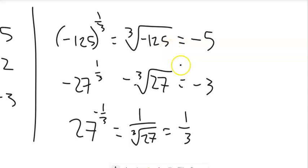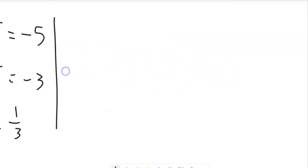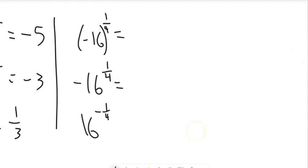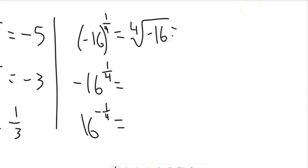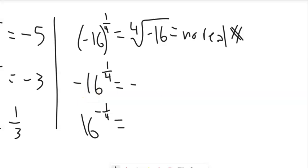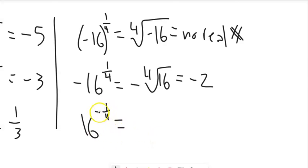The fourth root of negative 16: what times itself 4 times gives a negative number? There's no real solution, so the answer is no real number. But notice negative 16 to the 1/4 is different — only 16 is raised to the 1/4, giving the negative fourth root of 16. The fourth root of 16 is 2, so the answer is negative 2. The one with a negative exponent means divide by the fourth root of 16, giving 1/2.